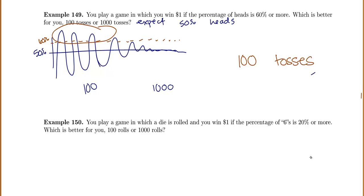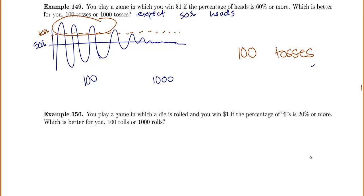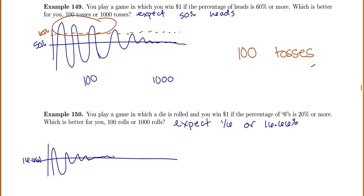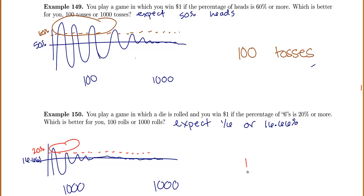In the next example, a die is rolled and you win $1 if the percentage of sixes is 20% or more. Which is better, 100 rolls or 1,000 rolls? Since it's a six-sided die with only one six, we expect one out of six sixes, which is 16.66%. You might bounce up and down, but eventually get closer and closer to 16.66%. Since we need to be above 20% to win — and 20% is above the expected 16.66% — being in the early bouncing around is more helpful, so 100 tosses is better.